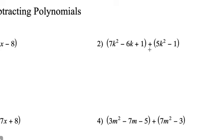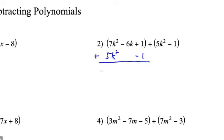Number two, we're finding the sum of 7k squared minus 6k plus 1, and 5k squared minus 1. I'll line up my like terms — the k squareds and the constants. Adding: 7k squared plus 5k squared equals 12k squared. The negative 6k just tags along, and the constants cancel because 1 plus negative 1 equals 0. So the sum is 12k squared minus 6k.